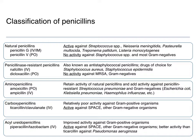Next are the aminopenicillins — amoxicillin (oral) and ampicillin (IV). These are the first penicillins used predominantly for their gram-negative activity. They have better coverage of resistant strep, including Streptococcus pneumoniae that may be resistant to natural penicillins but susceptible to aminopenicillins. They add coverage of gram-negatives — not Pseudomonas or MDR gram-negatives — but things like E. coli, Klebsiella, and other Enterobacteriaceae. These are used primarily for their gram-negative coverage.